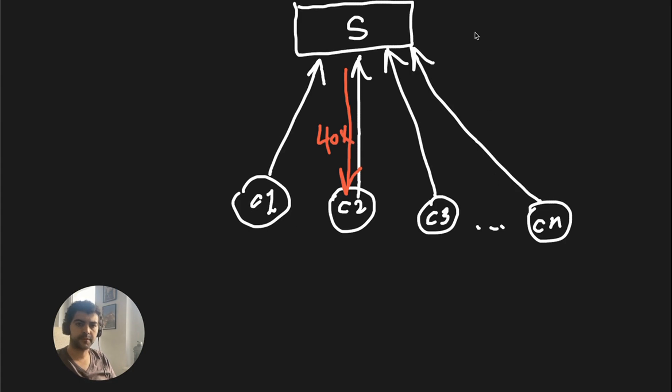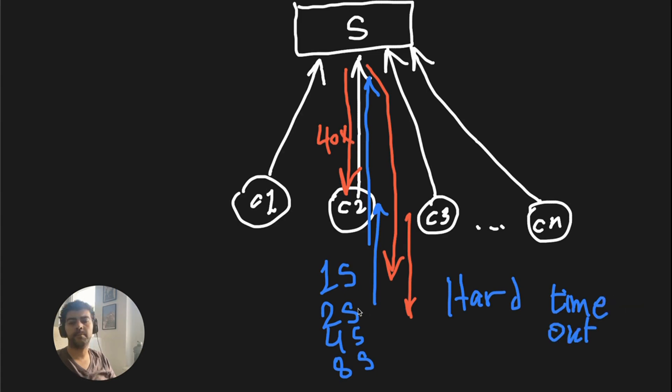Then C2 could think, 'that's a transient error, so instead of retrying right away, I will wait for one second.' Then I try again, but still get an error because the server doesn't have enough resources. Then after two seconds it tries again, still error. Then after four seconds, eight seconds. Normally in a situation like this, you want to put some hard timeout. But in this fashion, we're aiming to give the server enough time to recover.